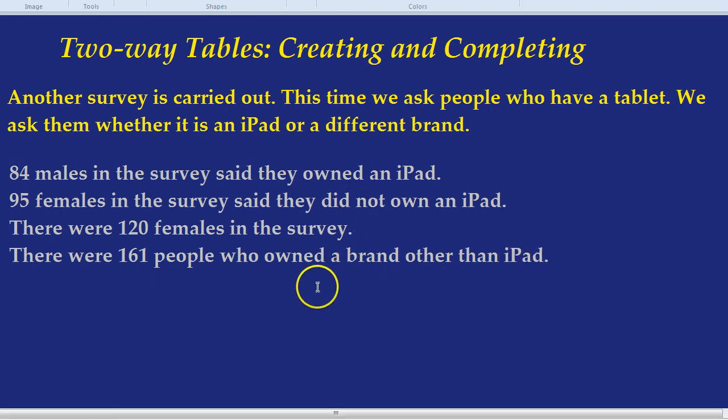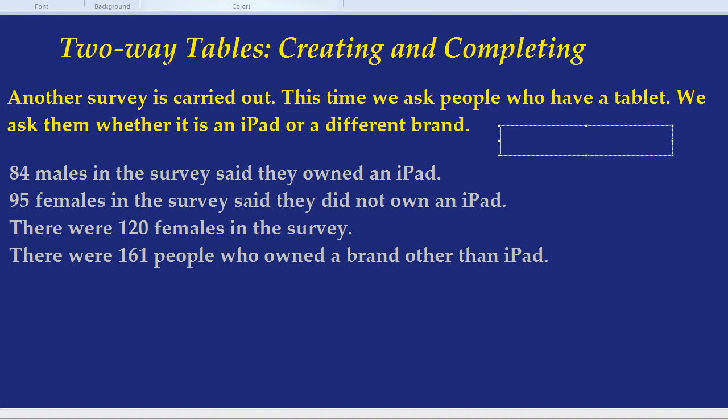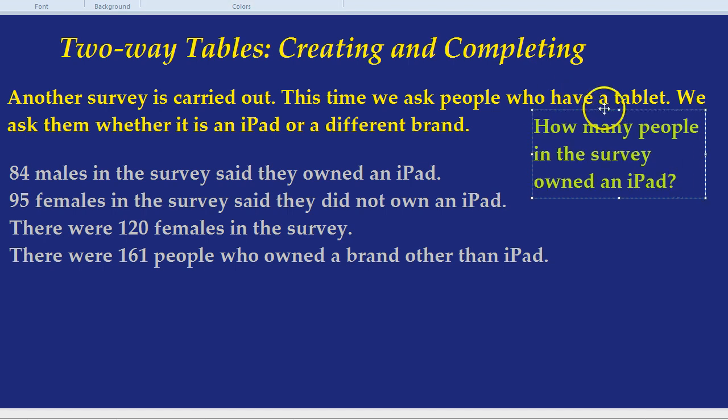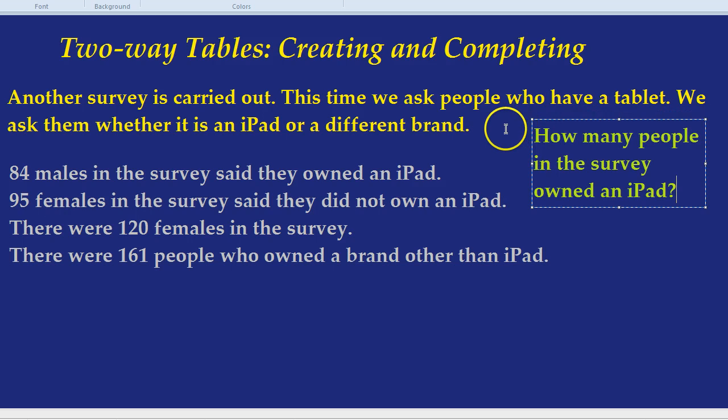If you just saw that in a question, you might not even think to draw a two-way table. But if I gave you a question over here, let's say, what would be a hard one to figure out? For example, how many people owned an iPad in total? How many people in the survey owned an iPad? Well, you'd look at that data, and you'd be like, well, there's 84 males who said they owned an iPad. How might I figure out how many females owned an iPad? And you might not be sure. I could ask you an even harder question, though. How many people were there in the survey altogether?